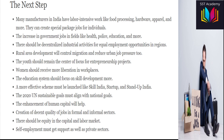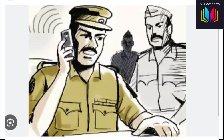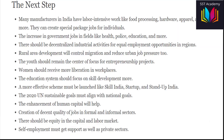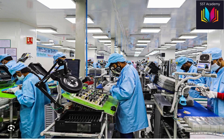Many manufacturers in India have labor-intensive work like food processing, hardware, apparel and more. They can create special package jobs for individuals. The increase in government jobs in fields like health, police, and education is needed. There should be decentralized industrial activities for equal employment opportunities in regions. Rural area development will control migration and reduce urban job pressure too.